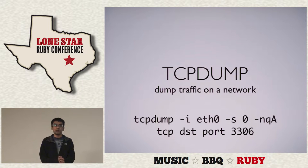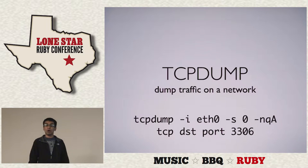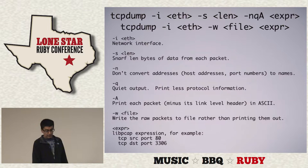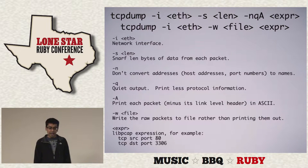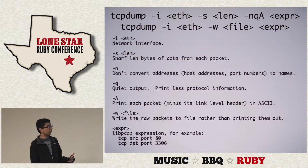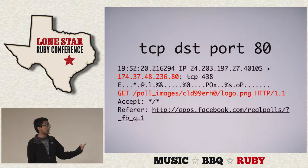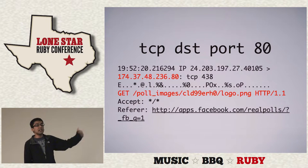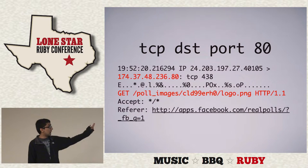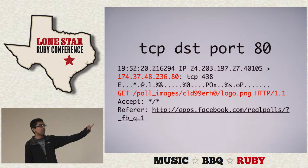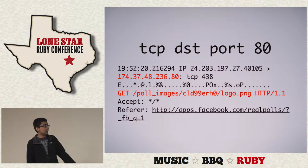The next tool is tcpdump. This is really useful for networking. There are a bunch of options, but it boils down to an expression you pass in that dictates what traffic you want to watch. You can type expressions like finding all TCP traffic going to port 80 — that's basically outgoing HTTP requests. You'll start seeing both incoming and outgoing HTTP requests, giving you a sense of what's going on. Here's an HTTP request that was probably incoming for a PNG — you can see what IP it came from, what IP it's going to.